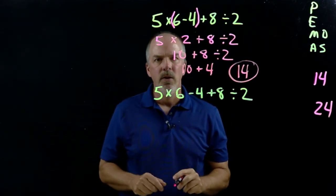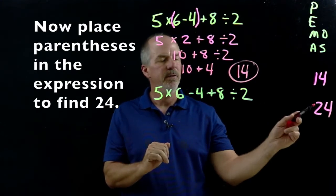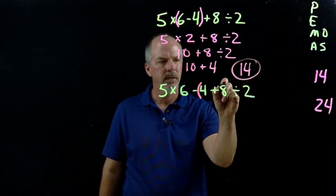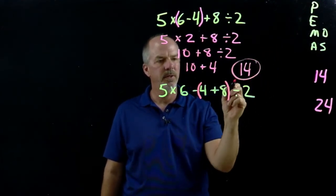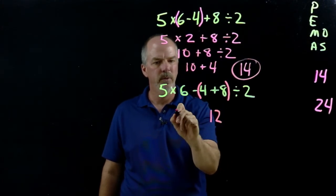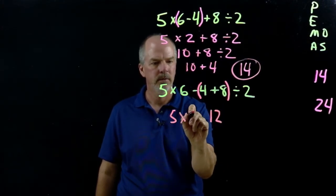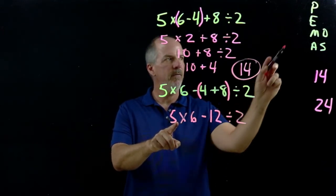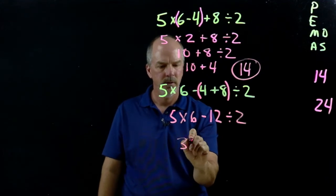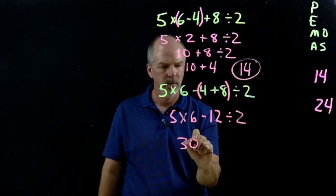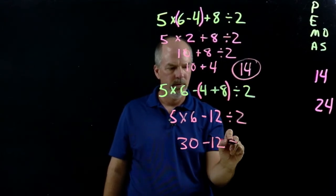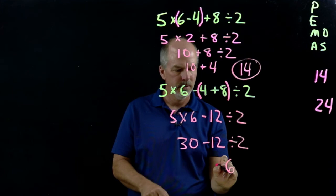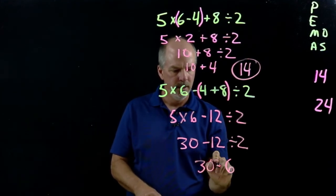The second part of this is: where can you put the parentheses and come up with an answer of 24? If we put the parentheses here, order of operations forces us to do parentheses first: 4 plus 8 is 12. We'll bring everything else down. Now we have multiplication and division, so we work left to right — we'll do 5 times 6 first, then bring our minus 12 divided by 2. Now we do division: 12 divided by 2 is 6. We bring our 30 down, and 30 minus 6 is 24.